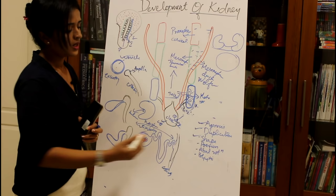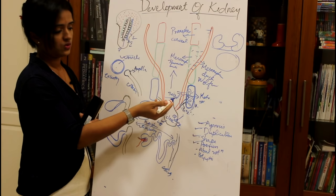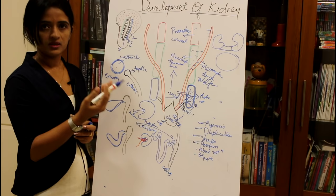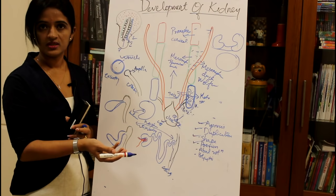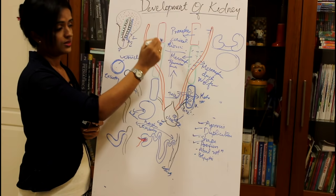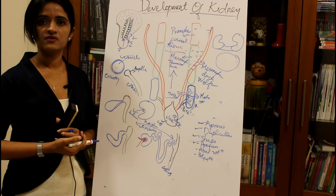Regarding positional anomalies: normally the metanephros is in the sacral region and ascends to the lumbar region. Sometimes the kidney may not ascend, remaining in the sacral region in the adult. Sometimes it may ascend too high and be seen in the thoracic cavity.